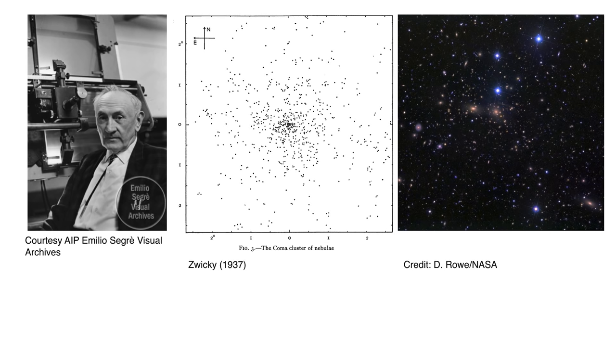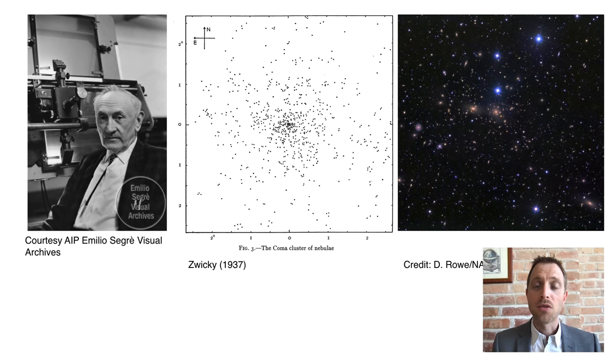So Zwicky made a number of observations using a specially designed telescope, one of the biggest telescopes at that time, to map out the distribution of nebulae within a big cluster called the Coma cluster. You can see at the center of this picture, Zwicky's original data, each one of the dots on the picture is a nebula or a galaxy. They're all part of the same cluster, they're held together by gravity. You can see on the right a modern picture of the same cluster showing these galaxies in more refined detail than Zwicky could see them.